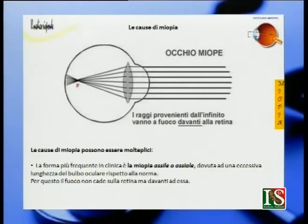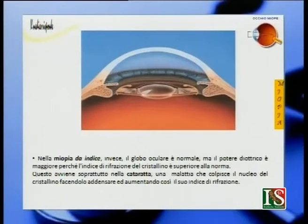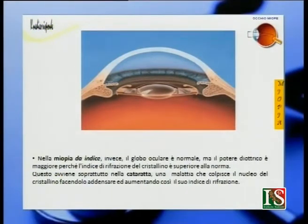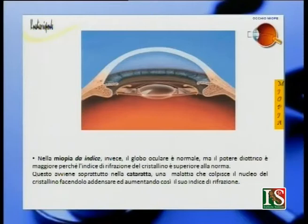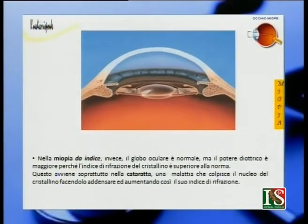La seconda miopia è la miopia da indice, seconda anche come frequenza. Il globo oculare è normale ma il potere diottrico è maggiore perché l'indice di rifrazione del cristallino è superiore alla norma. Questo avviene soprattutto nella cataratta, una malattia che colpisce il nucleo del cristallino facendolo addensare e aumentando così il suo indice di rifrazione.